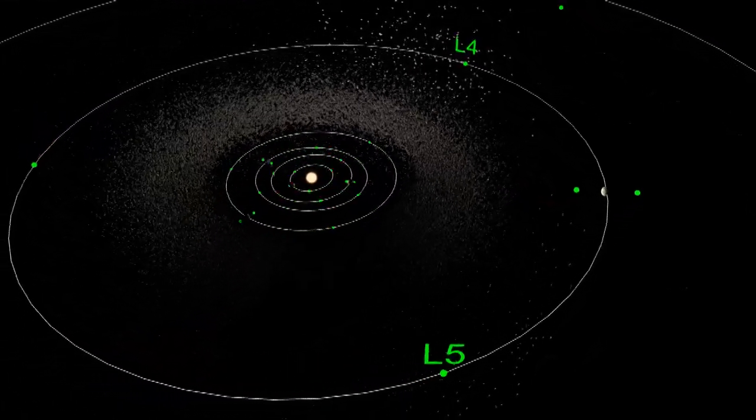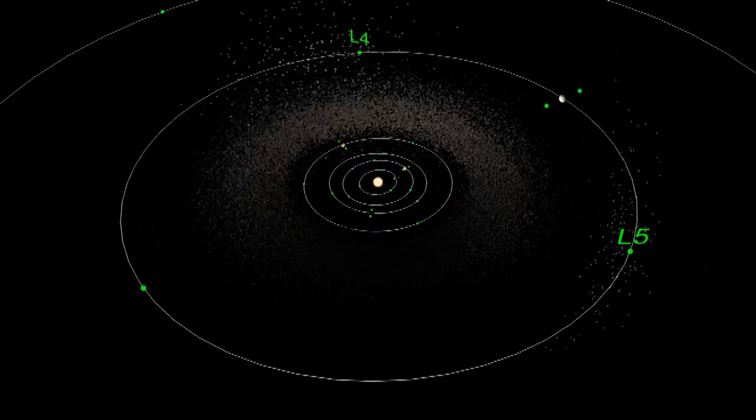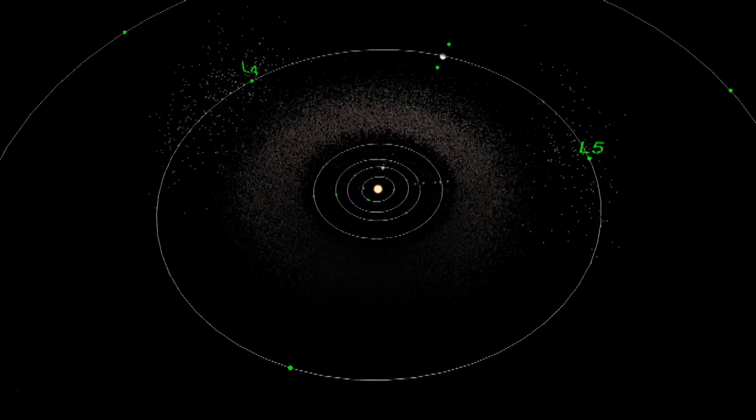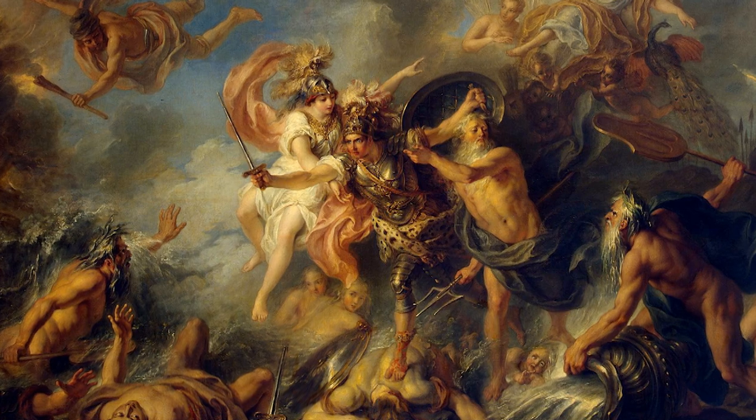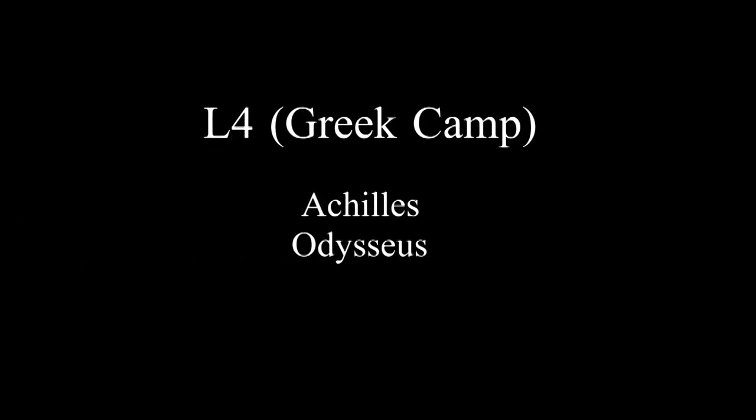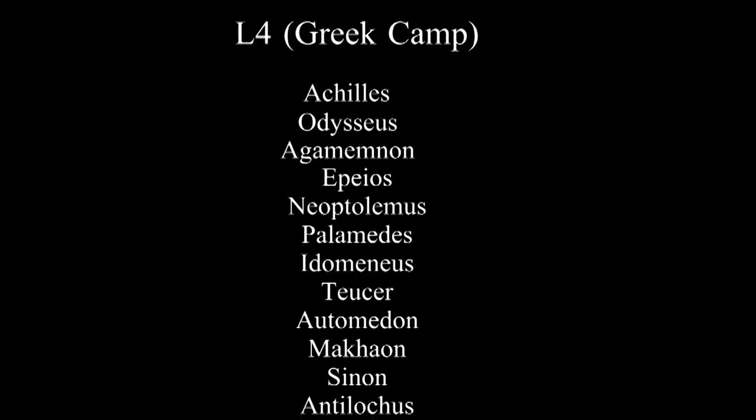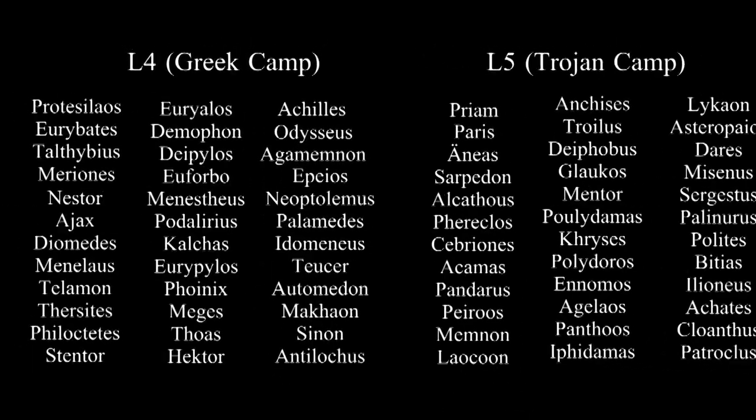These are called the Trojans by convention. These asteroids are named after heroes of the Trojan War. The L4 asteroids are named after the Greek warriors: Achilles, Odysseus, Agamemnon. The L5 asteroids are named after the Trojan side: Priam, Paris, etc.